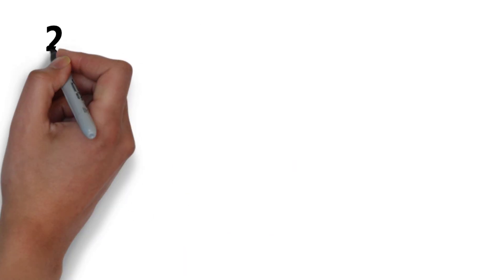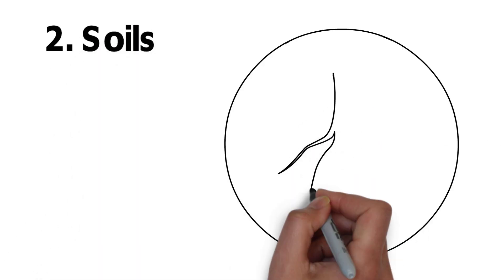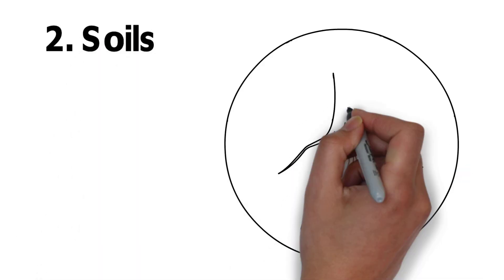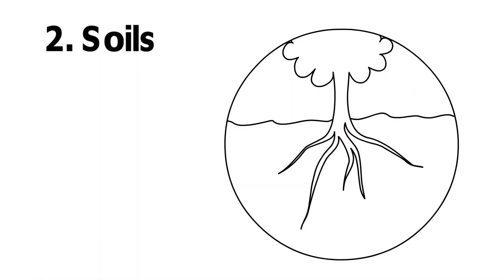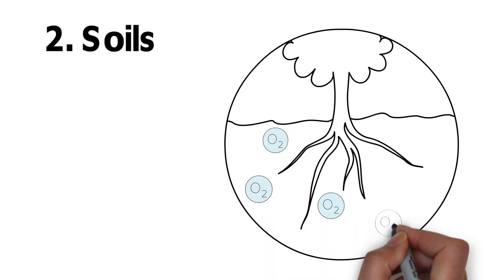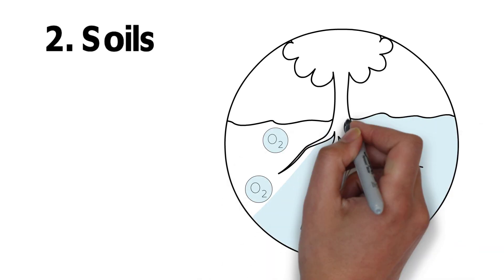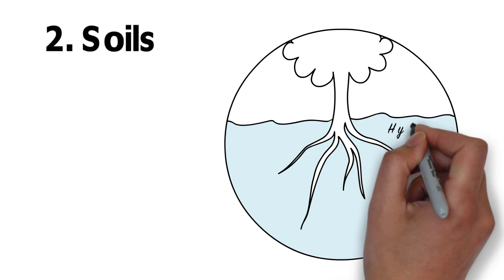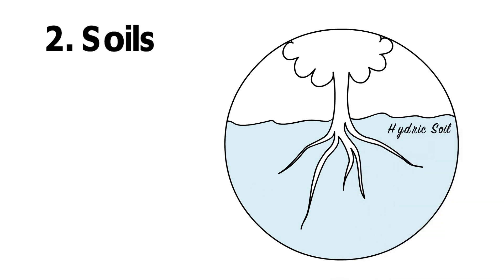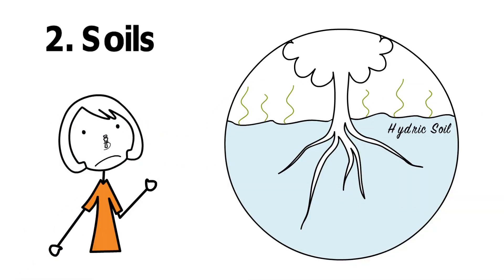Wetlands also have hydric soils. These are frequently flooded or saturated soils. Most non-wetland soils are full of oxygen, but in hydric soils, water replaces this oxygen, changing the soil chemistry. Did you know this is why wetlands often smell like rotten eggs?